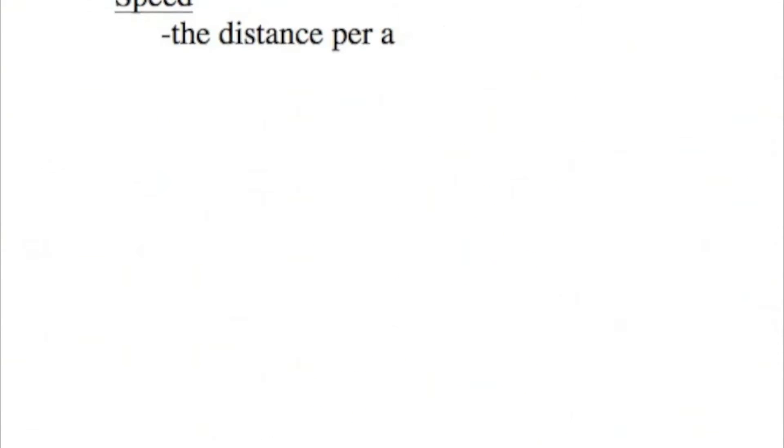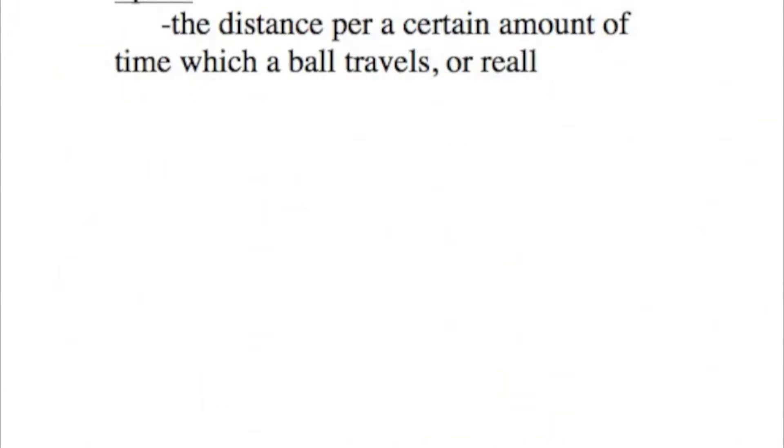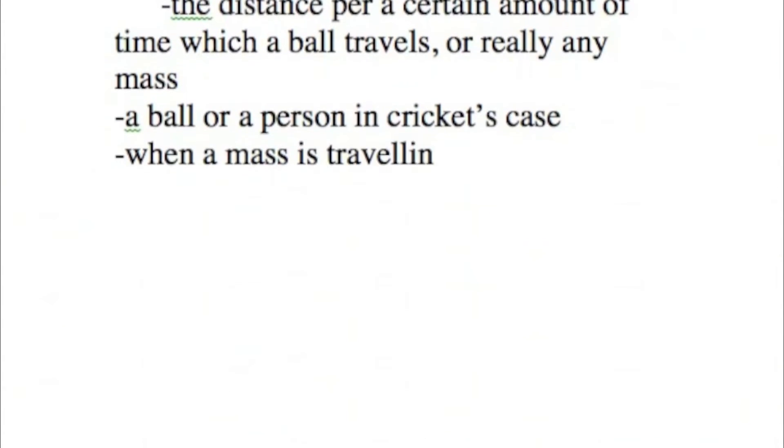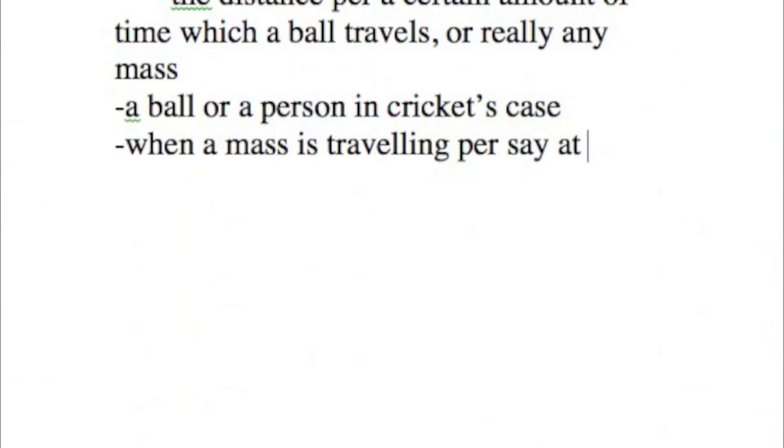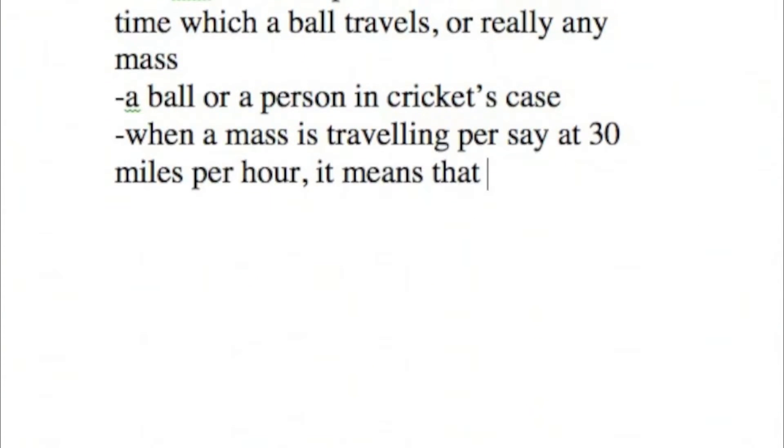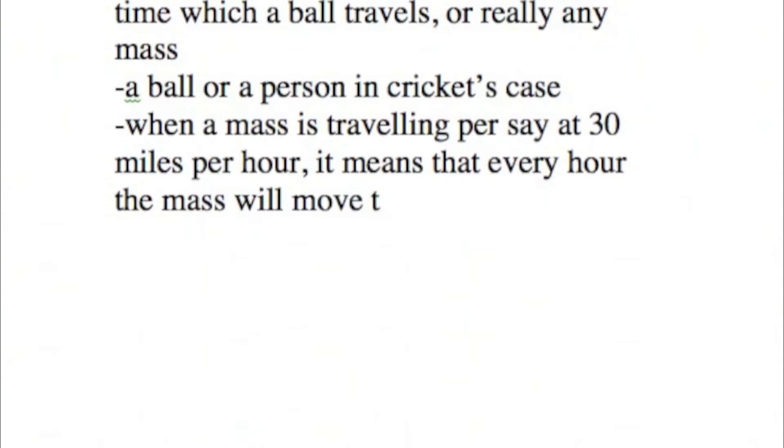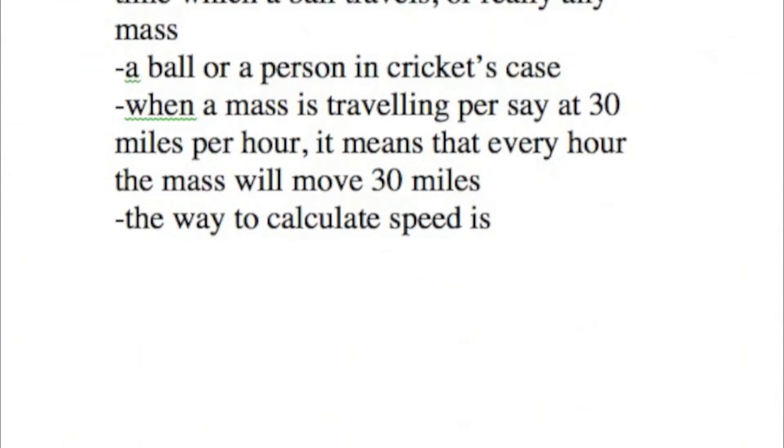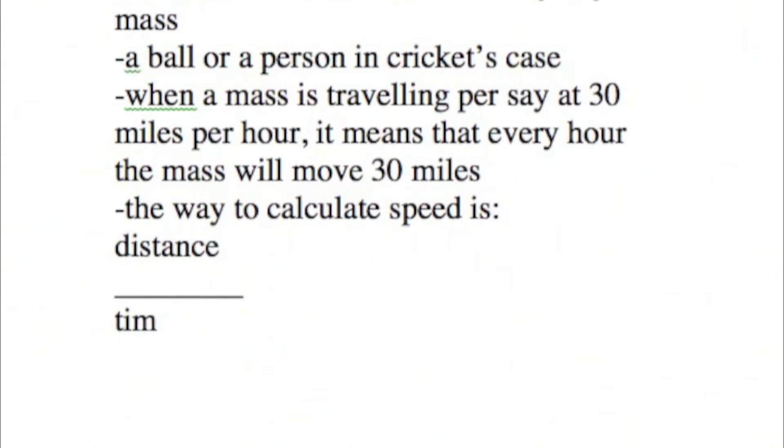Speed. Speed is the distance in a certain amount of time which a certain mass travels, a ball or a person in cricket's case. So if a mass is traveling around 30 miles per hour, that means every hour it will cover 30 miles. The speed is calculated distance divided by time.